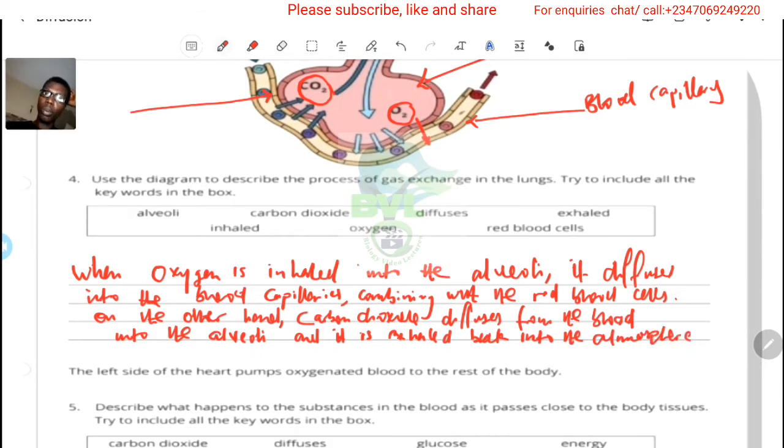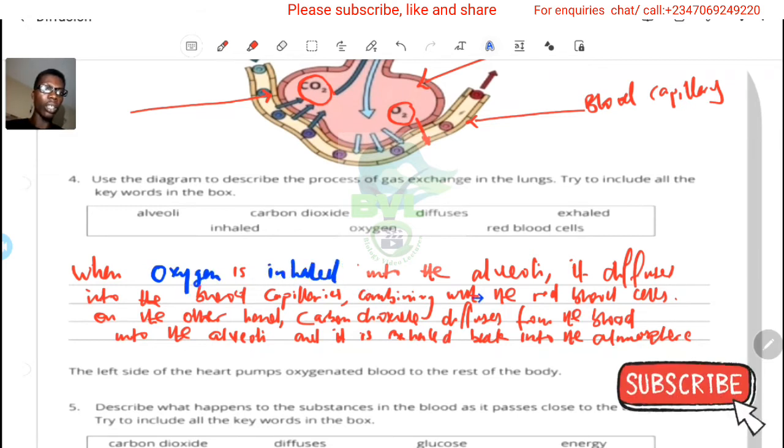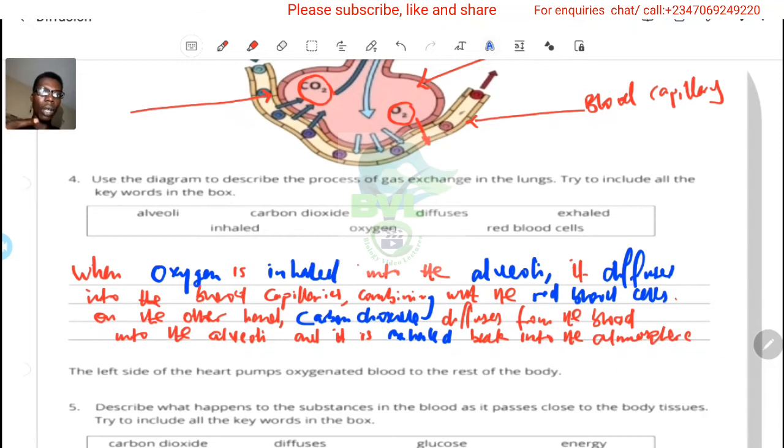Of course, you might not have to write the exact way I've written it. In this instance, I was able to use oxygen, inhaled, alveoli, diffuses, red blood cells, carbon dioxide, and exhaled. So the keywords, once you use them in the right context and grammatically correctly, it's fine.